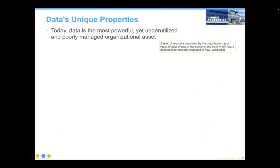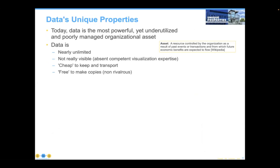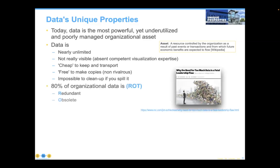We start with data as today's most poorly managed but powerful and underutilized organizational data asset. Data is relatively unlimited, not really terribly visible absent some competent visualization expertise. It's cheap to transport and move, it's free to make copies. As Doug Laney says, it's non-rivalrous — and of course, he also says it's impossible to clean up if you spill it. These make it a very unique proposition, especially in terms of assets. And yet when I tell organizations that 80% of their data is redundant, obsolete, or trivial, the only argument I've gotten in 35 years is, 'well, for us, it's probably 85% or maybe even 90%.' That's telling us something.